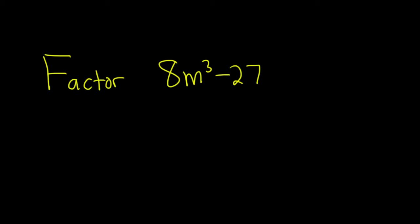Hi, in this problem we're going to factor 8m³-27. Let's go ahead and go through the solution. Because we have a three here and we have a minus, we should think about the difference of cubes formula. Let me show you how I memorize it.